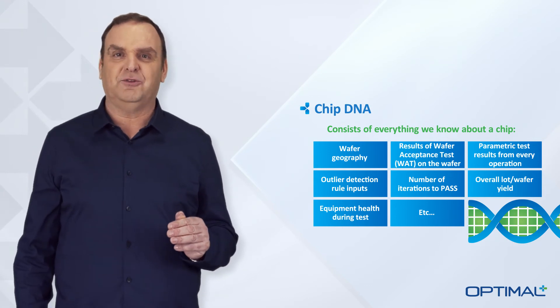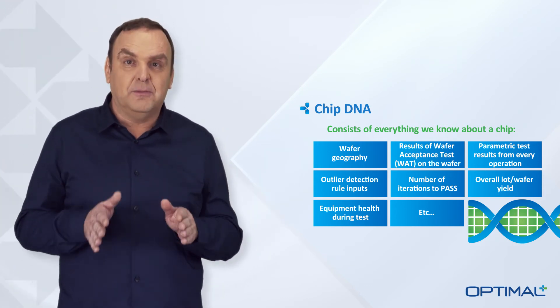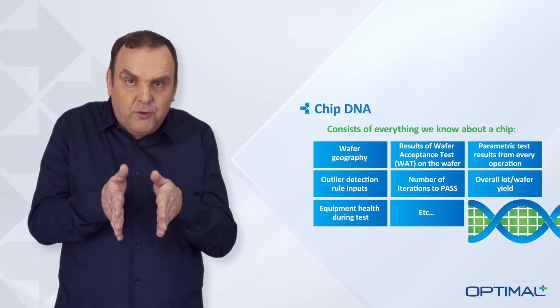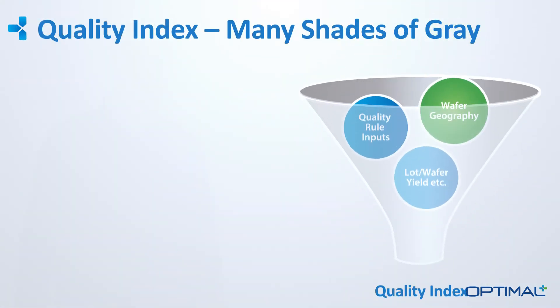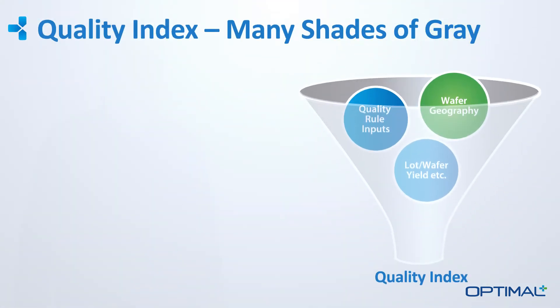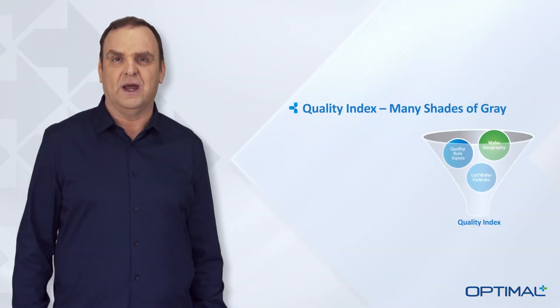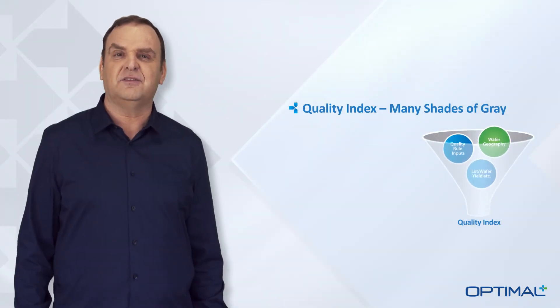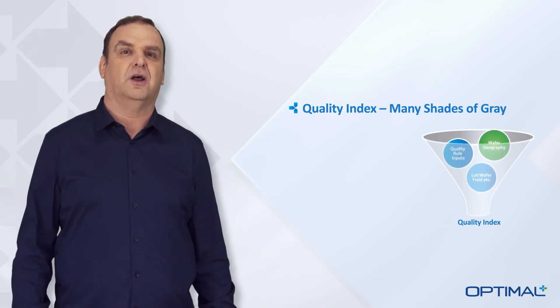So how can we encapsulate all of this information and use it to make more informed quality decisions? First, we distill the raw data into what we call a quality index. This index is a weighted function of the key factors that impact device quality. The specific factors and weights can be determined by analyzing historical data for the product.